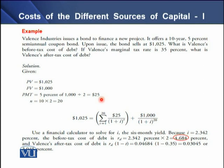With a 10-year bond and semi-annual compounding, the total number of periods is 20. Putting our values into the model, we get a YTM equal to 2.342%, or 2.34%, which is the before-tax cost of debt. Converting to an annual rate gives 4.68%. After applying the 35% tax rate, the annual after-tax YTM comes to 3.045%, or approximately 3.05%, which is the cost of debt on this instrument.